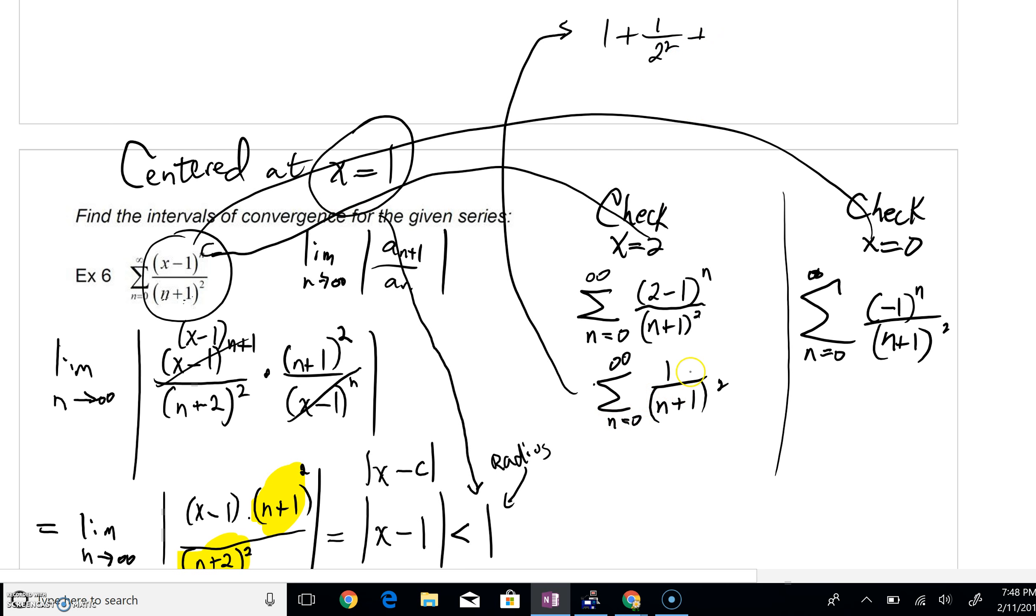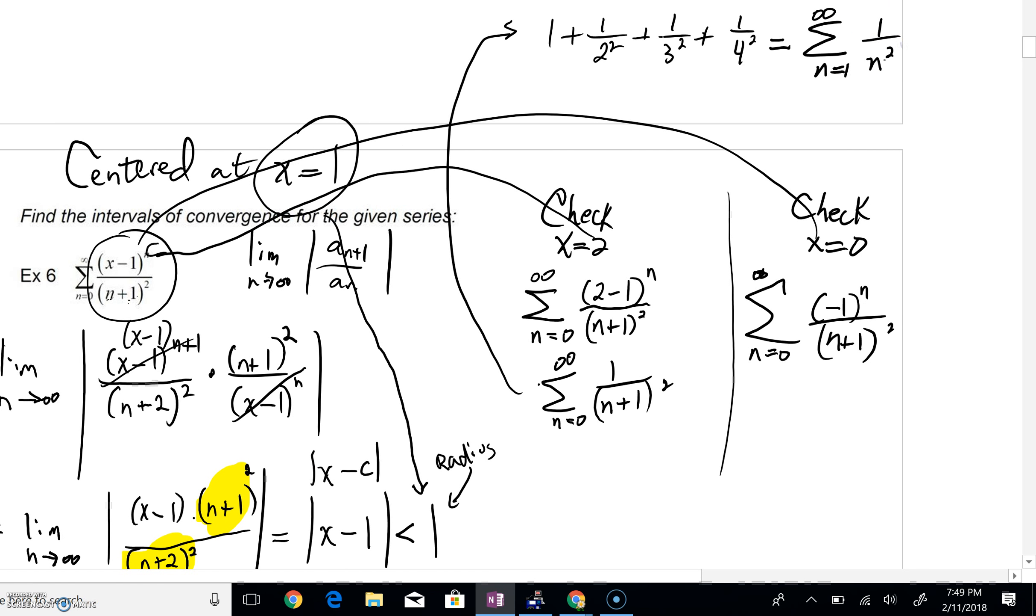If I plugged in n equals two, I'd get one all over, well, two plus one is three squared. Hopefully you get the idea. You can see what's happening. If I plugged in three, the third term n equals three, I'd have four squared down here. And I guess what I'm trying to show you is this is really the same exact thing as one over n squared from n equals one to infinity.